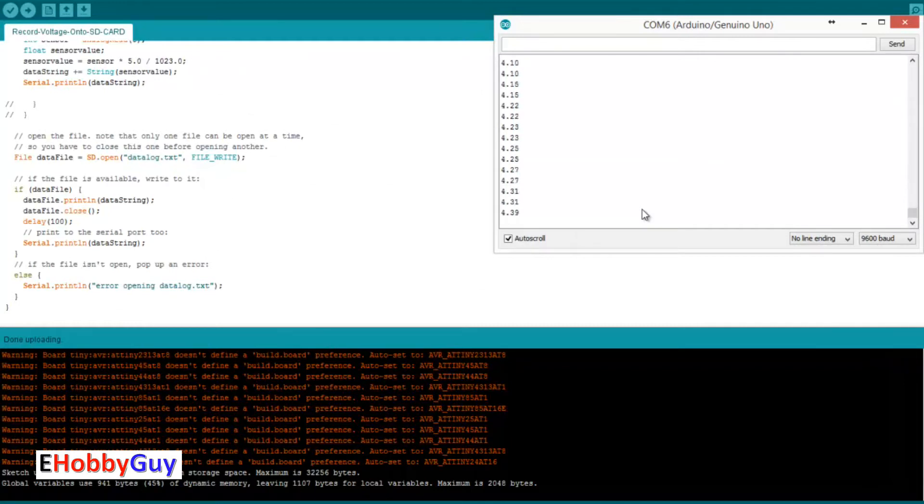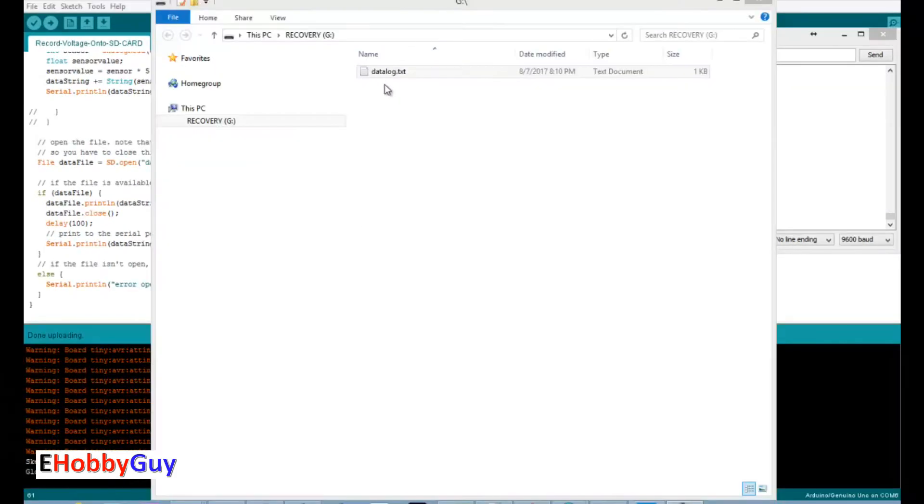There we go, we're almost up to five volts. Let me bring it down nice and slowly, all the way down to zero. I'm going to bring it back up and then we'll stop it. The reason I stopped it is because I'd like to pop this card right out and dump the information into Excel and see what we can find.